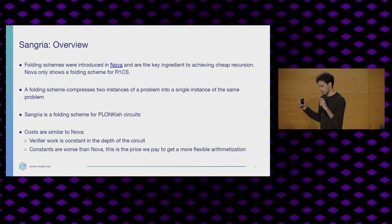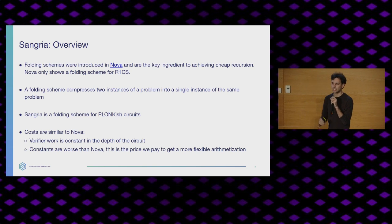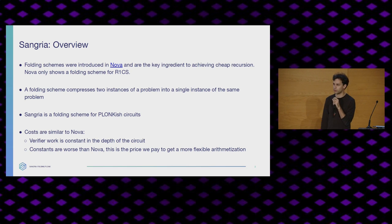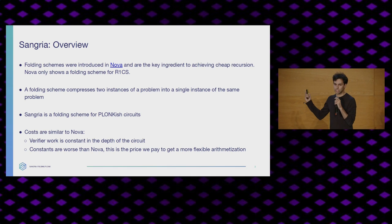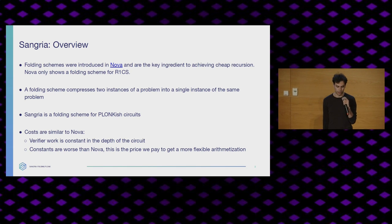What a folding scheme does is it compresses two instances of one problem into just one instance. So let's say I solve two Sudokus. Rather than showing you the two solved grids, I combine them into one and show you that one solved grid. So Sangria does that, but for Plonk circuits — actually for Plonk-ish circuits — and some of the extensions of Plonk are supported as well.